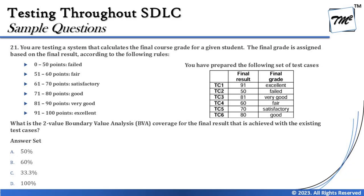All the values here are boundary values and there are 12 of them. Now on the right-hand side of the question, it says you have prepared the following set of test cases: 91, 50, 81, 60, 70, and 80 — six test cases in total. The question asks: by applying two-point boundary value analysis, what is the two-point BVA coverage for the final result achieved with the existing test cases?